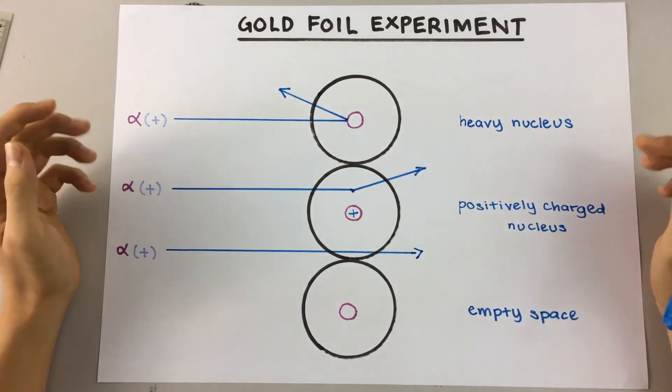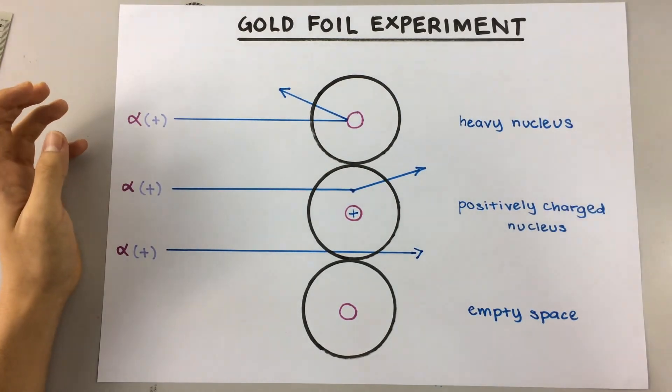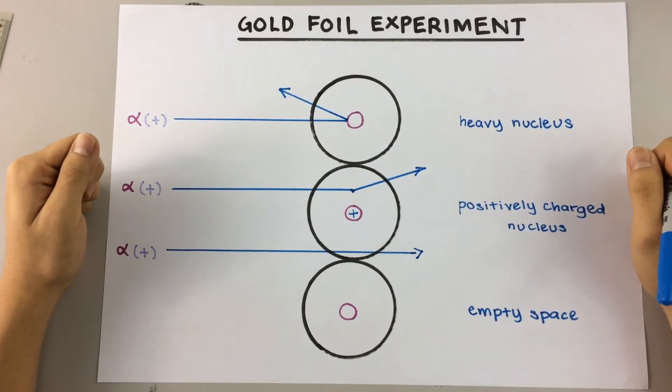And so from this experiment, Rutherford concludes that the atom has a heavy nucleus which is positively charged and the atom in general has a lot of empty space. And that's all you need to know. See you later. Thank you.